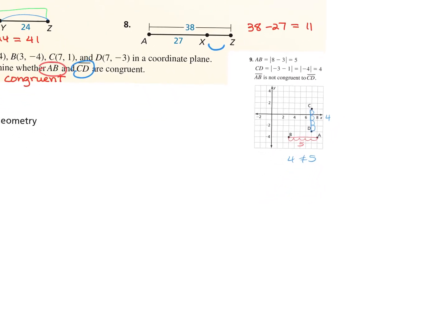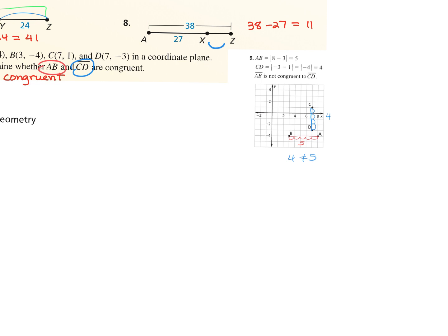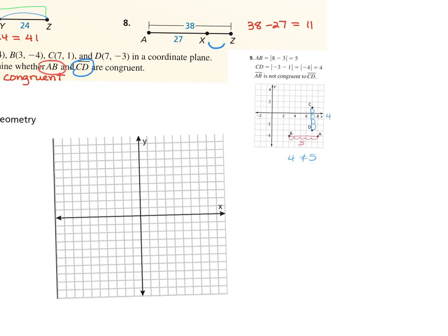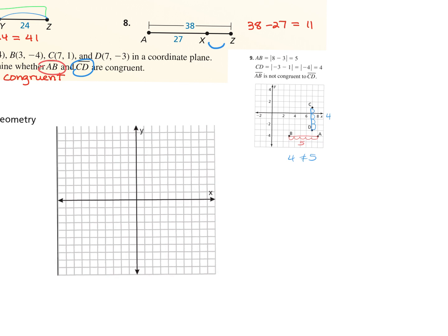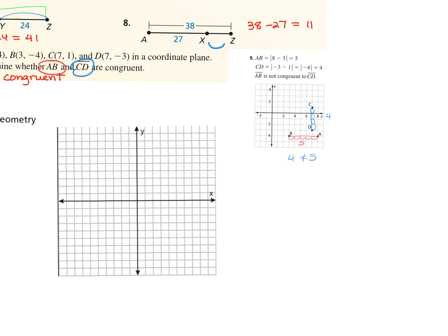I'm going to give you a coordinate plane with no numbers — you'll have to add the numbers yourself. I may give you coordinates forming a triangle or a rectangle, and ask you to find the perimeter and the area — but we'll see that coming up.